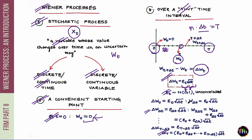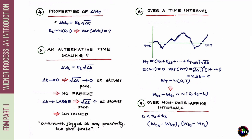Given our choice that delta Wt equals epsilon t times square root of delta t, let's examine the distribution of delta Wt. Since epsilon t is standard normal and we scale it by square root of delta t, the expected value of delta Wt equals zero, and the variance of delta Wt equals square root of delta t squared times the variance of epsilon t, which is one — so the variance of delta Wt equals delta t.